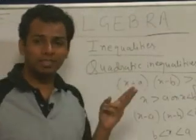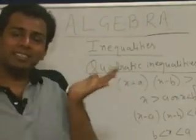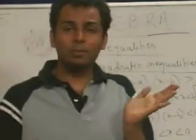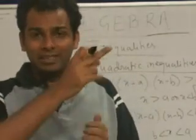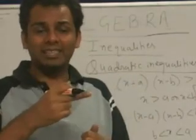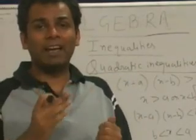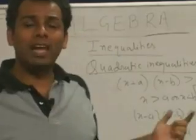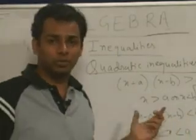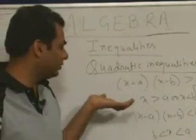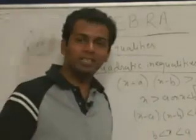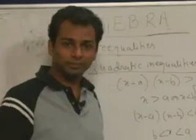There are only two possibilities: if there is a greater-than sign, the value never lies between the roots; if there is a less-than sign, the value always lies between the roots. For quadratic inequalities, we need to remember only these two things.